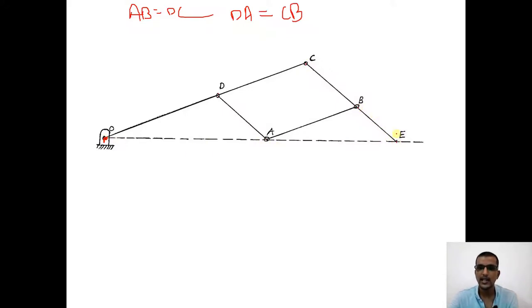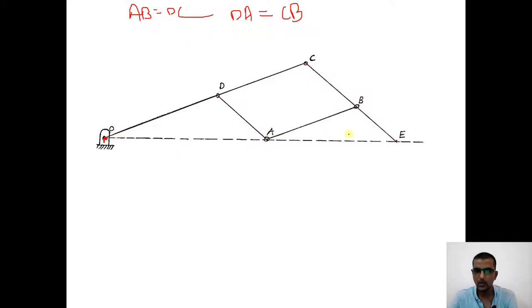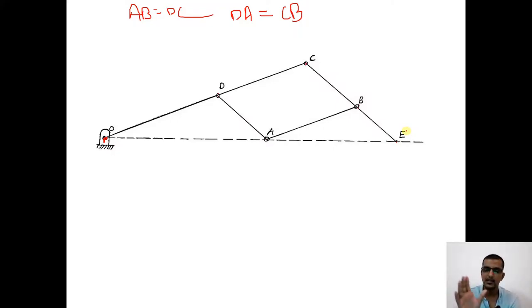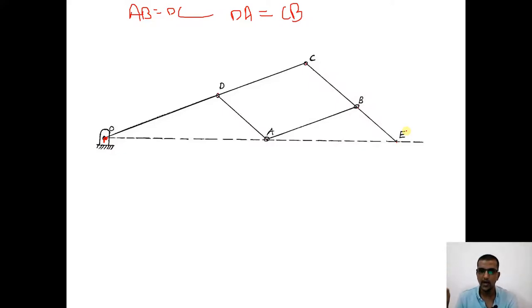Similarly, points C and B are extended up to point E such that O, A and E lie on the same straight line. So this is about the construction of a pantograph: a parallelogram ABCD where AB equals DC and DA equals CB. CD is extended up to O, which is fixed, and CB is extended up to point E such that O, A, E lie on the same straight line.